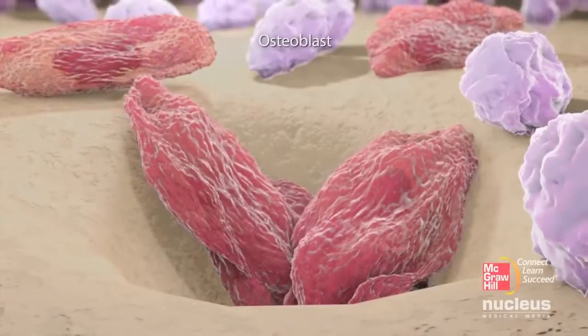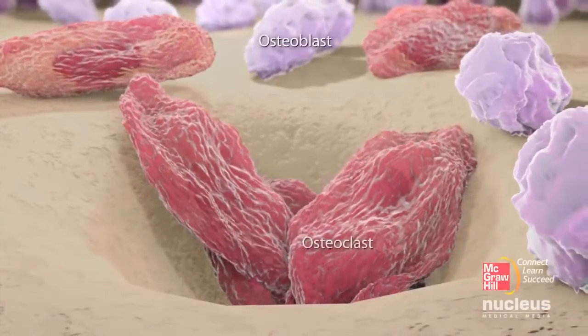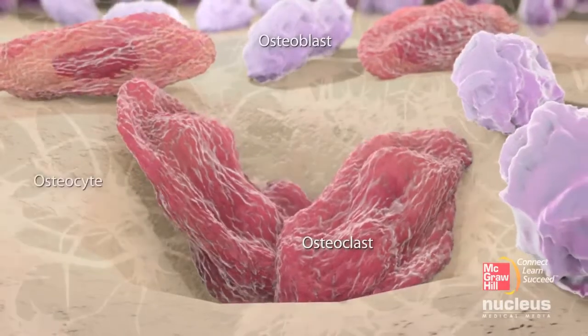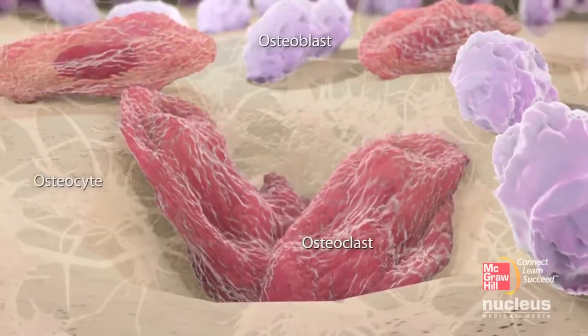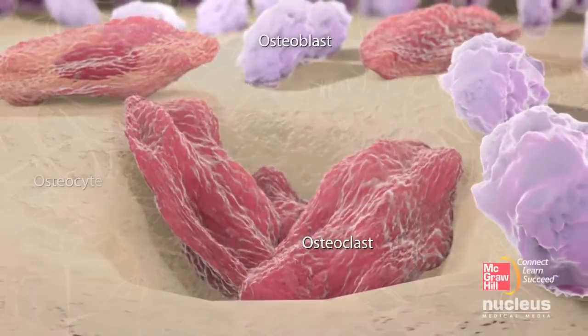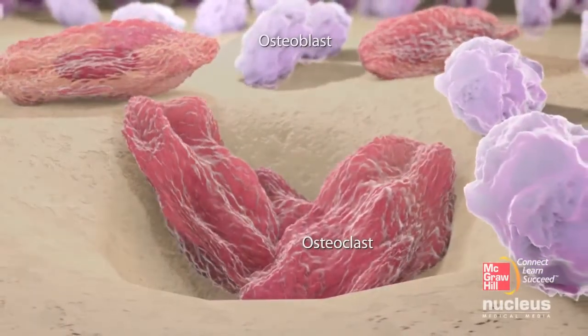Osteoblasts and osteoclasts are the osteocytes, or bone cells, that make up bone tissue.